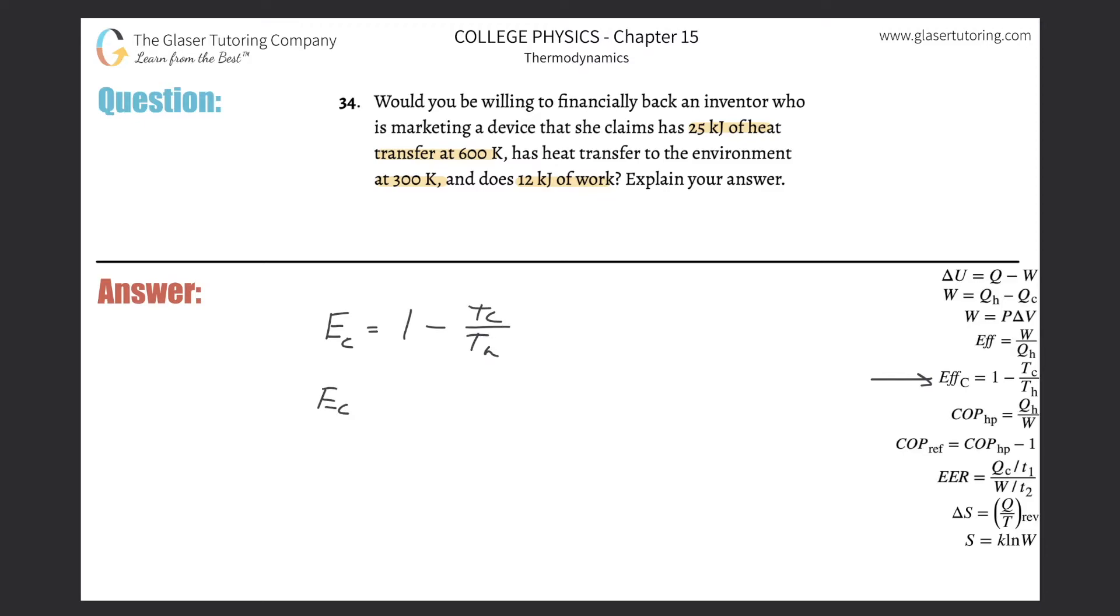So I can simply find now that the temperature of the cold was 300 Kelvin. I don't need to do any conversions because it's already in Kelvin. Divided by 600, this works out to 0.5. 1 minus 0.5 is simply going to be 0.5.